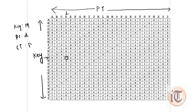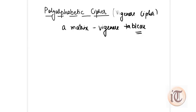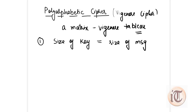The most important rule is that the length of the key must be equal to the size of the message, i.e., the plain text. If the length of the key is not equal to the length of the message, then we have to repeat the keyword until it matches the message size.